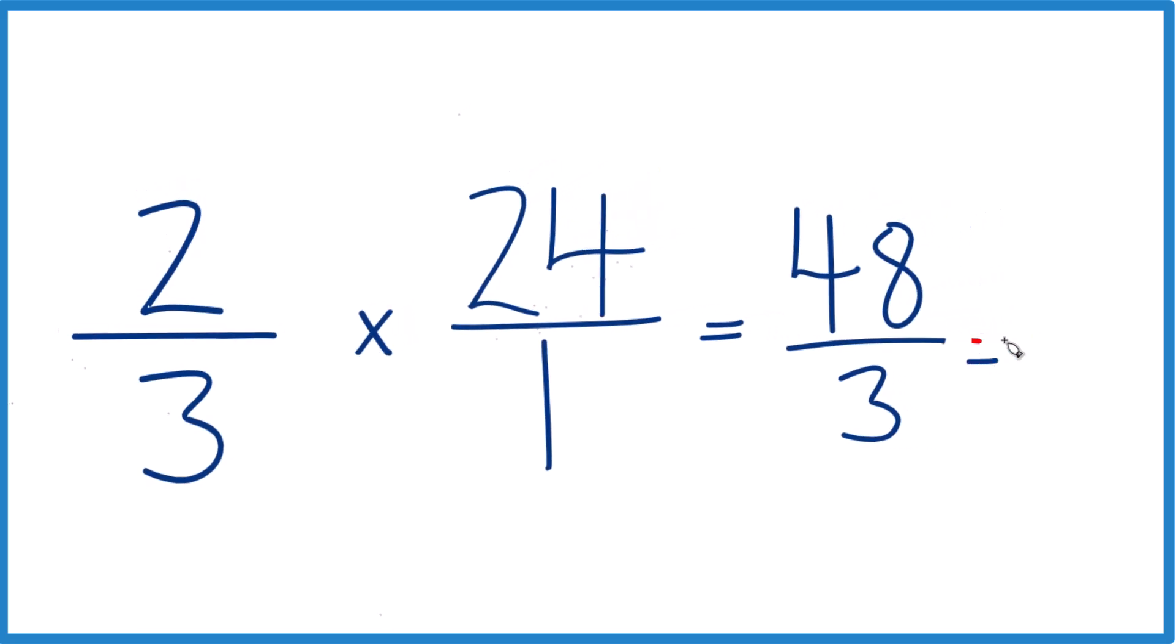3 times 16, that's 48. So two-thirds times 24, you could even say two-thirds of 24, that's going to be 16. That's it. This is Dr. B, thanks for watching.